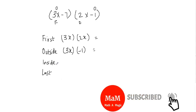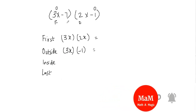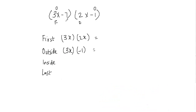Now we'll identify the inside terms and then multiply them. The inside terms would be negative 7 from the first binomial and 2x from the second binomial — see how they're on the inside, that's why they're inside terms. So we have negative 7 from the first binomial and 2x from the second binomial.